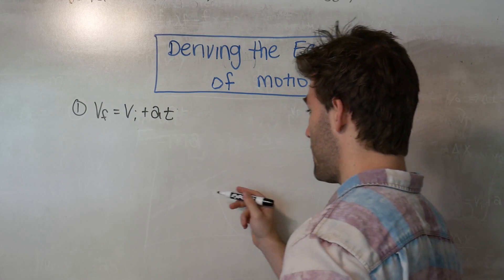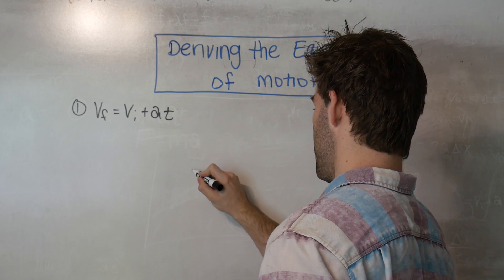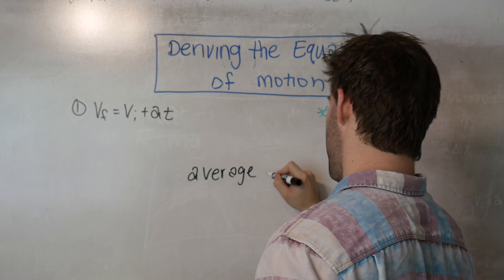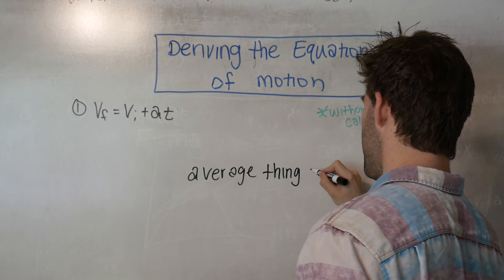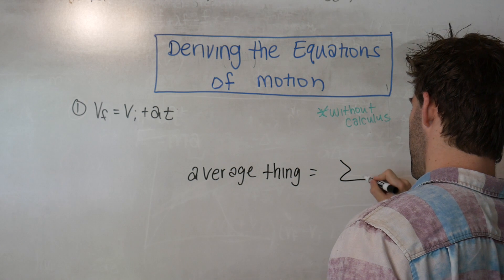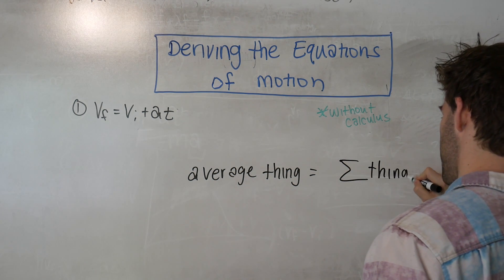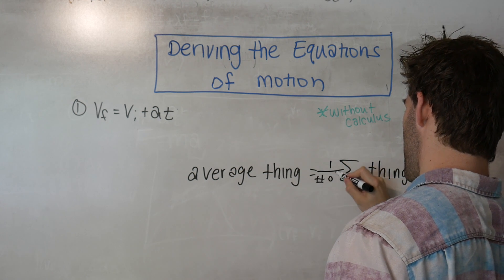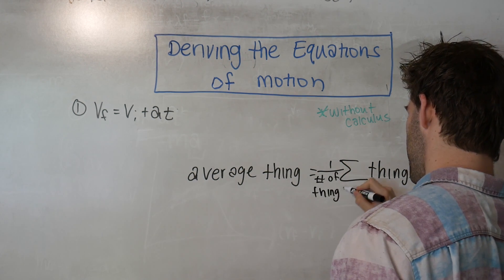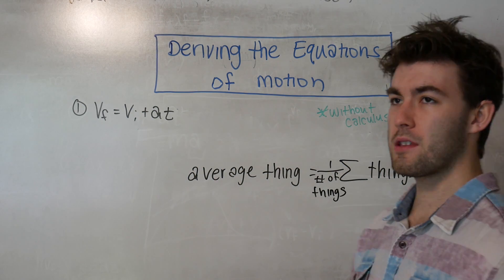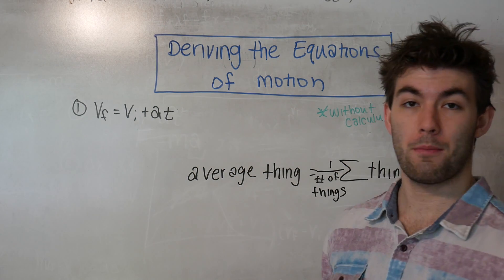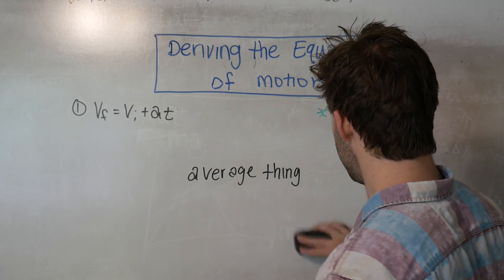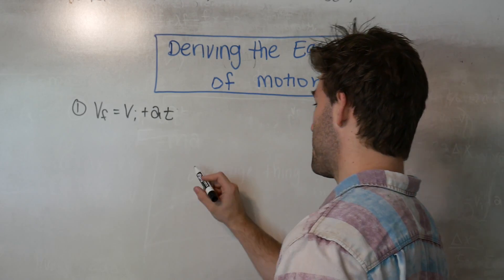So let's define the definition of the average of something. So the average thing is equal to the sum of all the things divided by the number of things. So for the second equation of motion, the thing that we're concerned about is velocity. We're going to make that substitution. So we're going to find our average velocity.